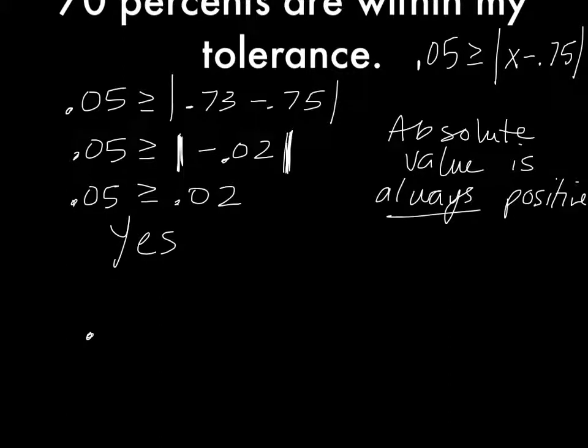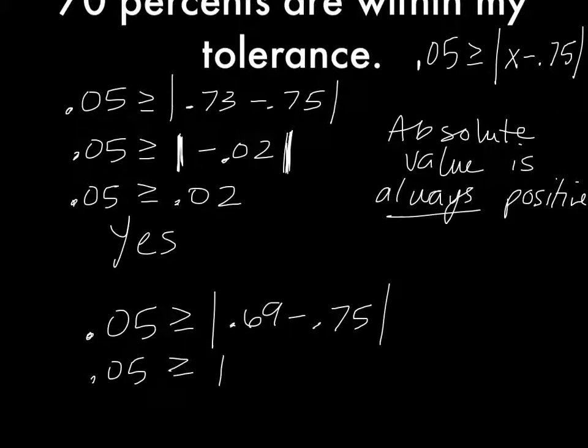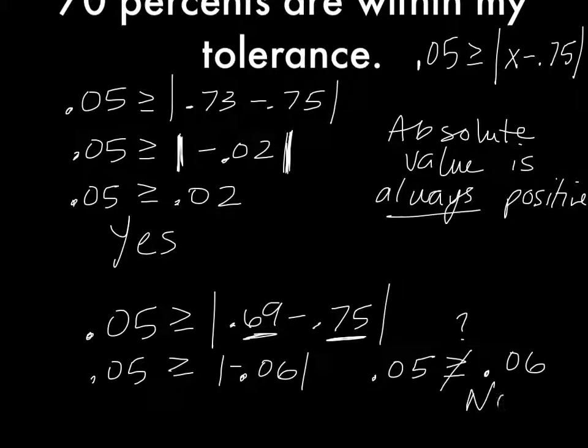Let's put in the 69, I guess. 0.05 is greater than 0.69 minus 0.75. We want the difference of 5% to be greater than or equal to the difference between the kid's score and the target goal. 0.69 minus 0.75 is negative 0.06. Absolute value of negative 0.06 is positive 0.06. Is that true? 0.05 is not greater than 0.06, so that kid's score would not be within my target goal for his grade.